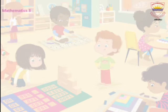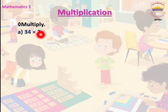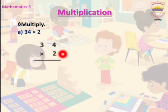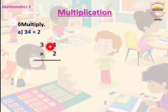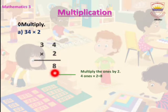Now let's solve question number 1: 34 multiplied by 2. Here 34 is the multiplicand and 2 is the multiplier. We multiply place by place. First, we multiply 2 with the 1's place: 4 ones multiplied by 2 equals 8. We write 8 at the 1's place.